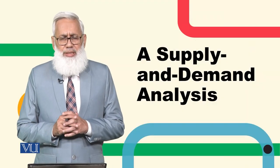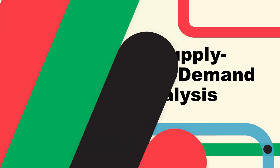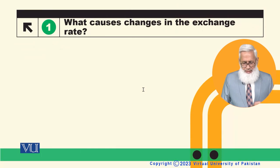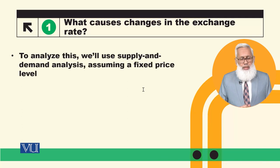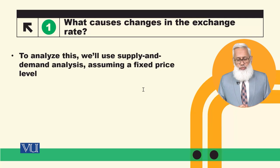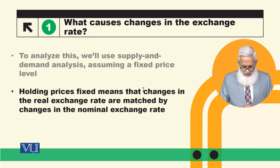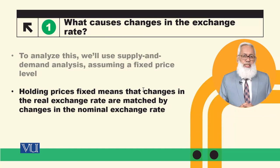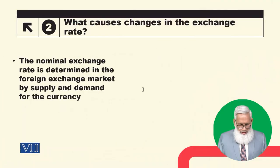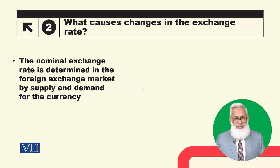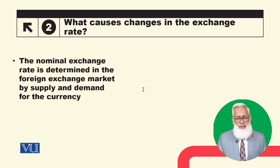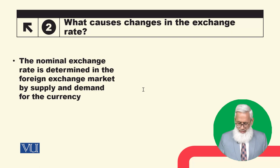How exchange rates are determined — a supply and demand analysis. Today we will see what causes changes in exchange rates. We will use supply and demand analysis and assume that prices are fixed. When prices are fixed, changes in the real exchange rate are matched by changes in the nominal exchange rate. So the nominal exchange rate is determined in the foreign exchange market by supply and demand for the currency.